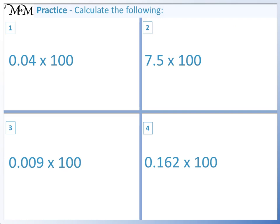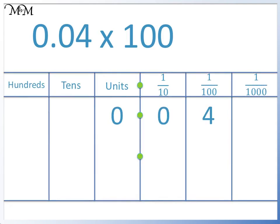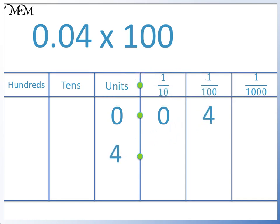Here are some questions for you to try. Pause the video now and have a go. Question 1: 0.04 times 100. We move the 4 two places to the left. 0.04 times 100 equals 4.